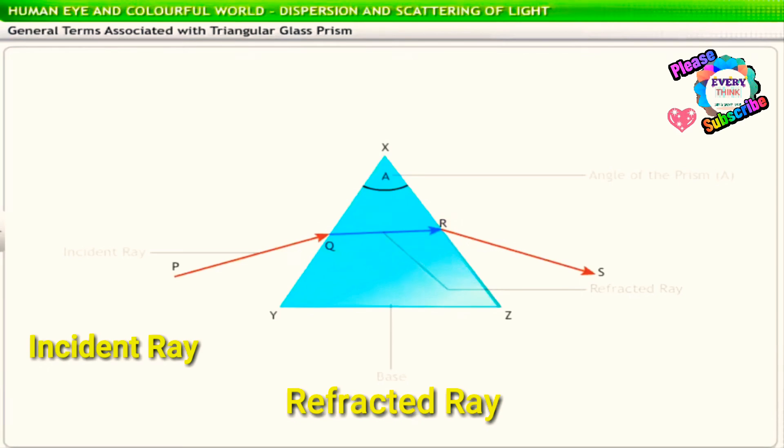The refracted ray again incidents on the other surface of the prism and then emerges from it into the air. This light ray emerging from the prism after refraction is called the emergent ray. Here, RS is the emergent ray.